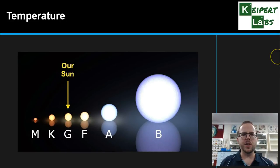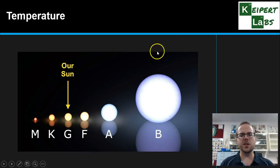So looking at temperature, you can see there that we have different classifications of stars that we give a letter code to. You can see the image of our sun over here, which is a G type of star.